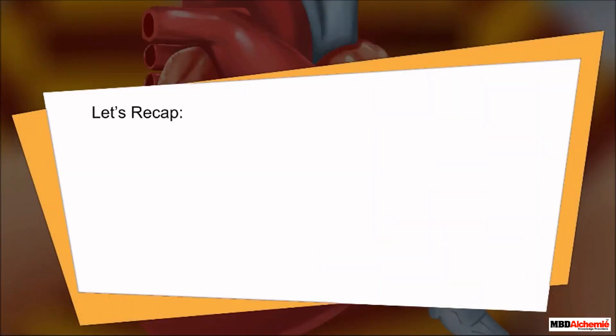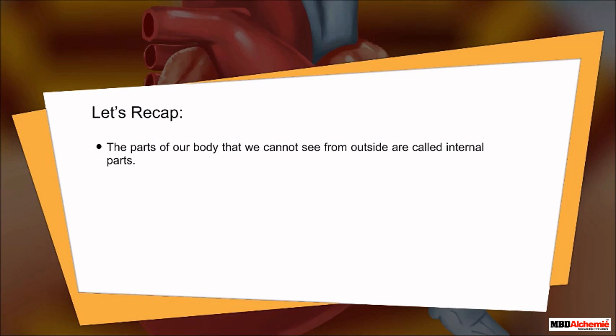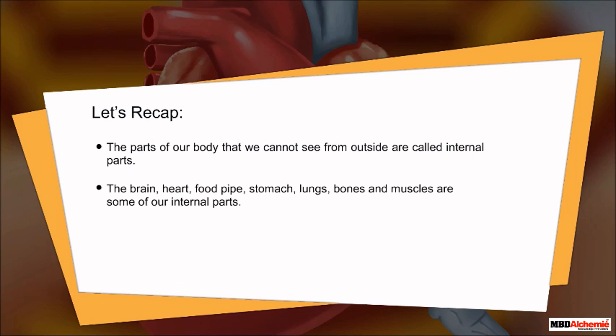Let's recap. The parts of our body that we cannot see from outside are called internal parts. The brain, heart, food pipe, stomach, lungs, bones, and muscles are some of our internal parts.